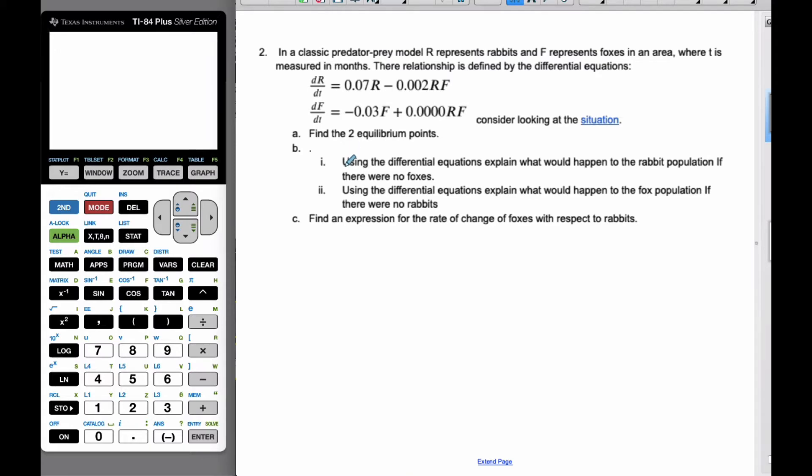So let's consider this. The first thing we want to do is find the two equilibrium points. Well, equilibrium points happen when both of these are equal to zero. So if I take that first equation, set it equal to zero, I can factor out the r, so r times 0.07 minus 0.002f equals zero. These are multiplied, so that means r is zero, or this equals zero. So I'm going to get 0.07 over 0.002, and if I do that, I get 35 foxes.